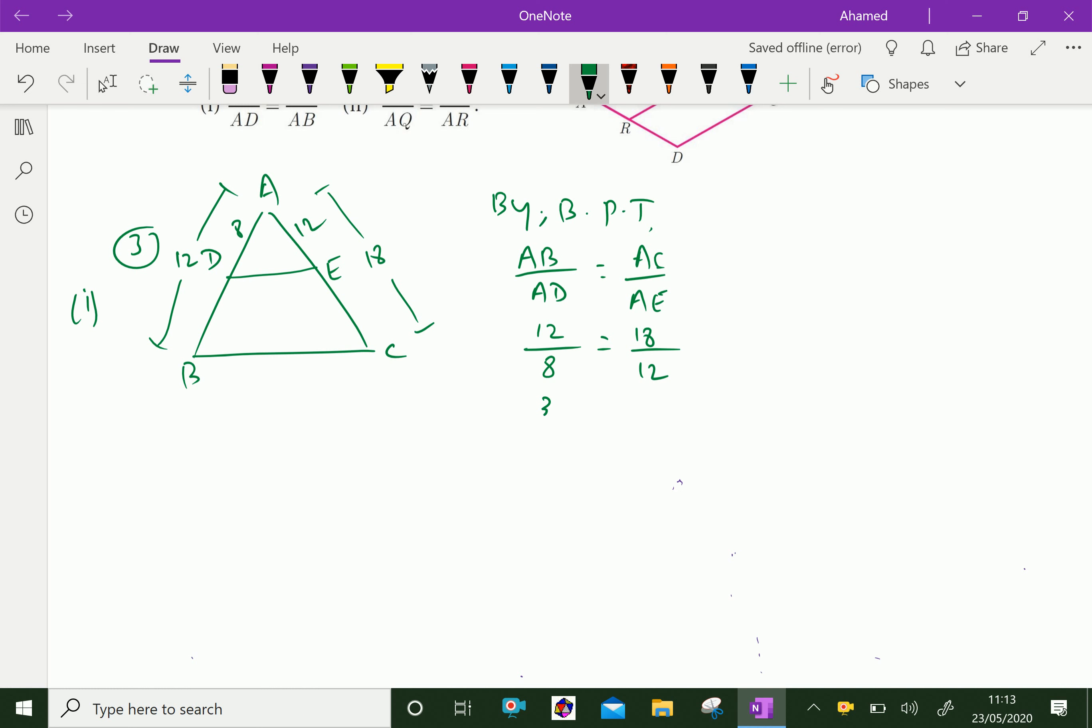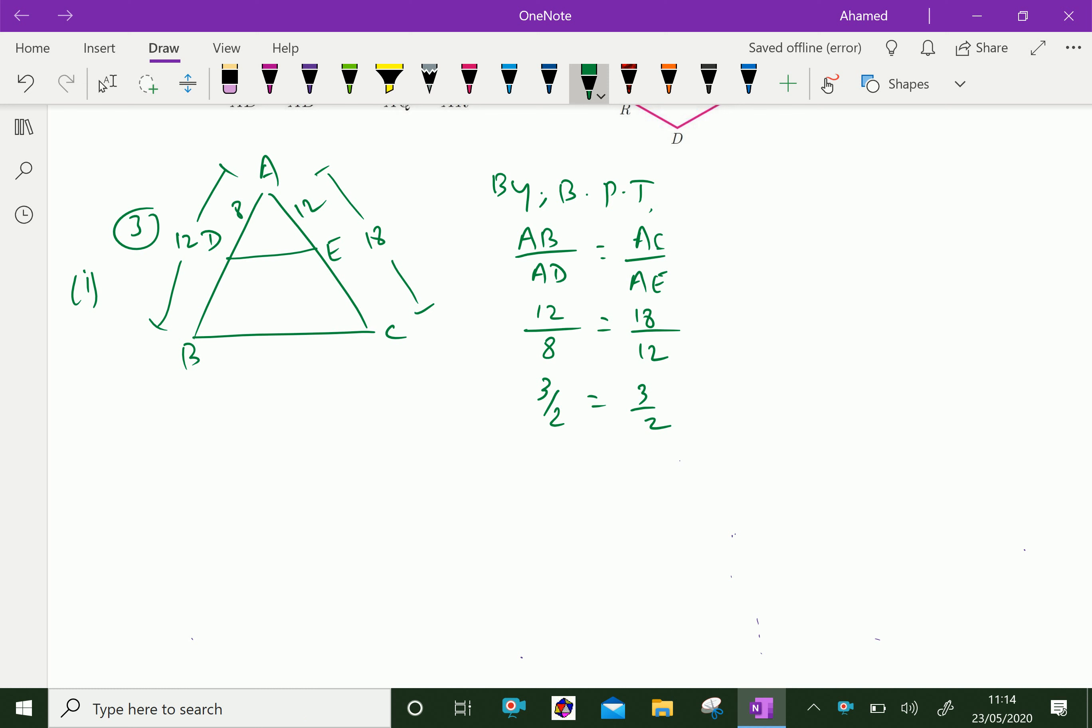Here 12 by 8 is 3 over 2. 18 by 12 also 3 over 2. Both sides are equal. From that, we can say by basic proportional theorem, here both side is 3 by 2. So we can say DE parallel to BC.